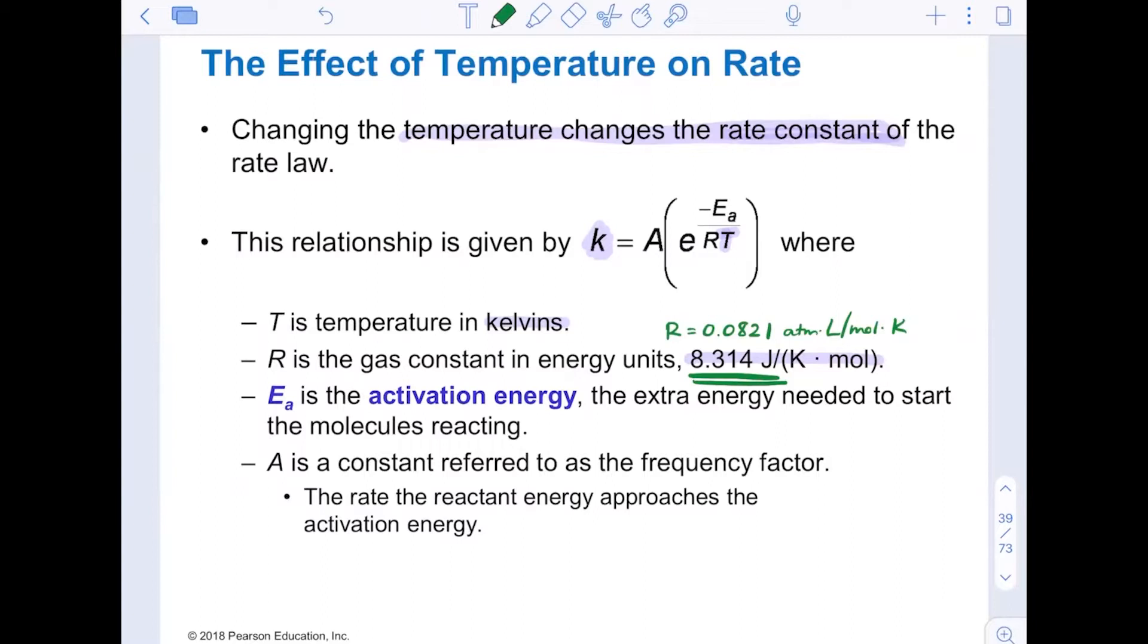We need to use joules because we are trying to convert with activation energy. Ea up here, the negative Ea is very important, and that's what makes this equation very specific to the reactions. Ea is the activation energy. It's the energy needed to get the molecules starting to react. We'll see on our reaction coordinate diagram in just a second what activation energy actually is, and A is called the frequency factor. It's a constant for each individual reaction, and it is looking at the reactant energy as it approaches activation energy.